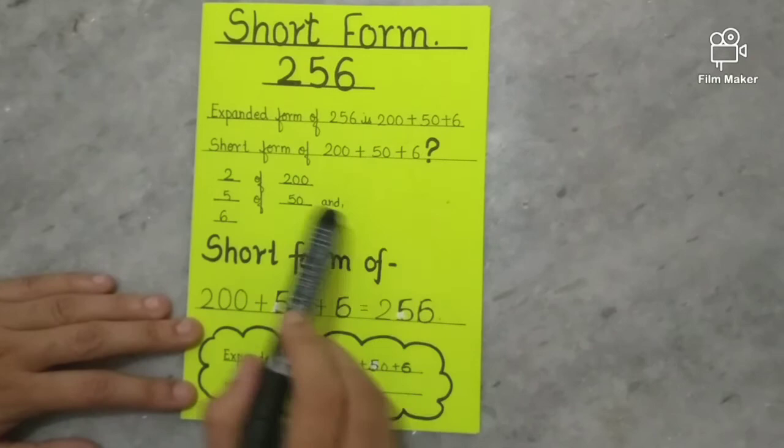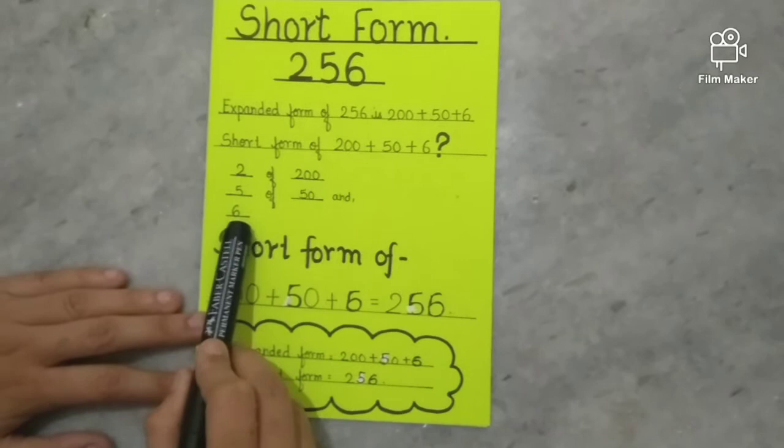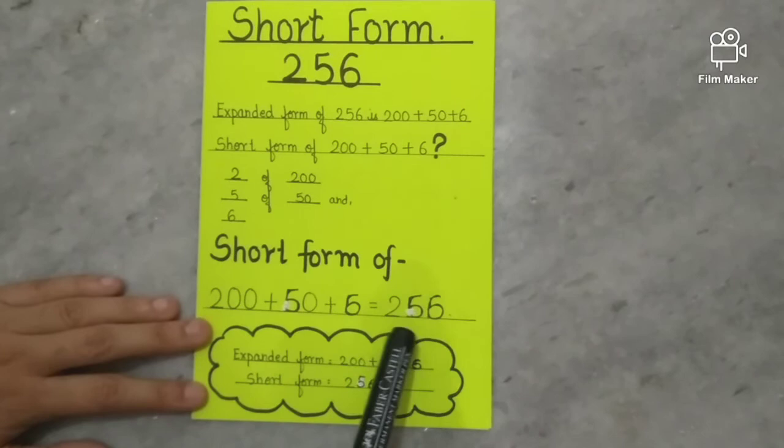For short form, we will write 2 of 200, 5 of 50, and 6. So the short form of 200 plus 50 plus 6 is 256.